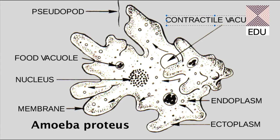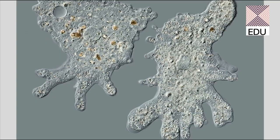That was the basic structure of Amoeba Proteus. Now I am showing you a real picture of amoeba from a microscope, where we can see all these structures. This is a real picture of two amoeba wandering in a drop of water. If you concentrate on this particular first amoeba...